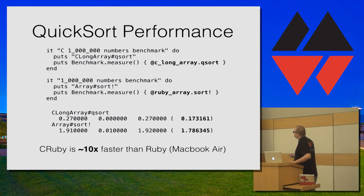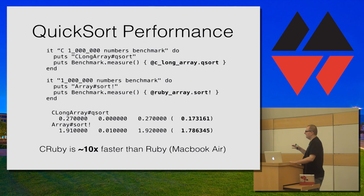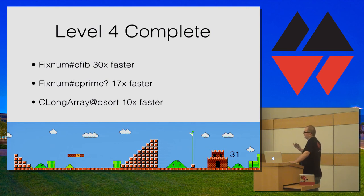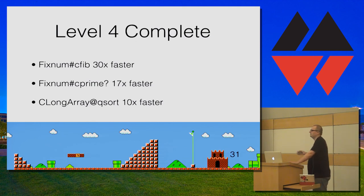Also remember that when we built Ruby, we actually disabled all optimization. If you build your version of Ruby with optimization flags, this will be even faster. This completes level four — we implemented C fib, which was 30 times faster; C prime, 17 times faster; and quicksort. We hacked the fixnum class directly in C and then also created a completely new class all in C.